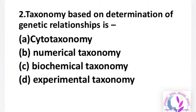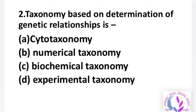Next question: taxonomy based on determination of genetic relationship is — option A: cytotaxonomy, B: numerical taxonomy, C: biochemical taxonomy, D: experimental taxonomy. The answer is D, experimental taxonomy. Cytotaxonomy is based on cytoplasm, numerical taxonomy on number systems, biochemical taxonomy on biochemicals, and experimental taxonomy is based on genetic relationship.